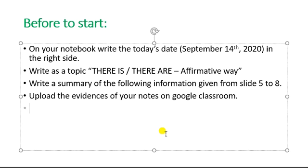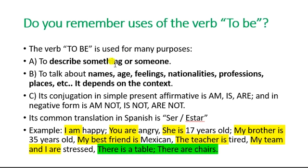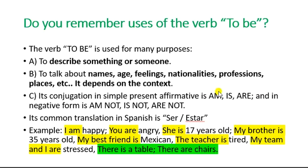Finally, you're going to upload your evidence on Google Classroom. So let's start. First of all, do you remember the uses of the verb 'to be'? The verb 'to be' is used for many purposes: to describe something or someone, to talk about names, age, feelings, nationalities, professions, places, etc., depending on the context. Its conjugation in simple present affirmative is: am, is, are. Remember that 'am' belongs to 'I,' 'is' belongs to 'he,' 'she,' 'it,' and 'are' belongs to 'you,' 'we,' 'they,' and 'you' in a formal or polite way.